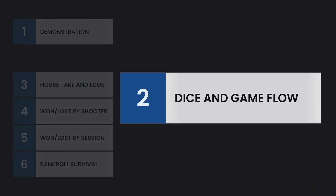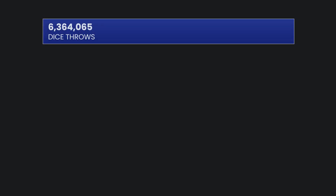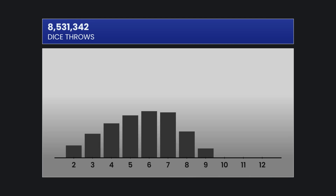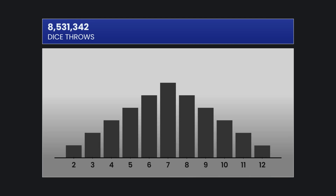Now let's take a look at the dice and the game flow. We threw the dice 8.5 million times. Here in gray is the distribution that is expected from the dice, and in blue we have the actual numbers. You can see they line up very closely with the expected distribution of dice throws.